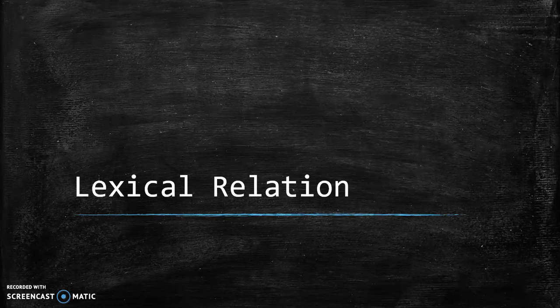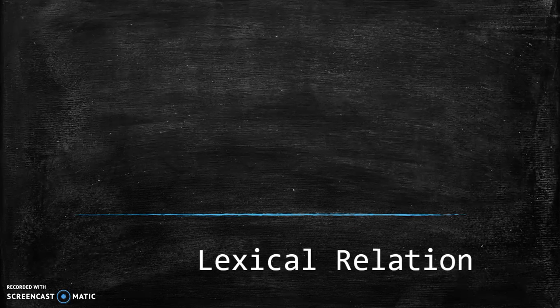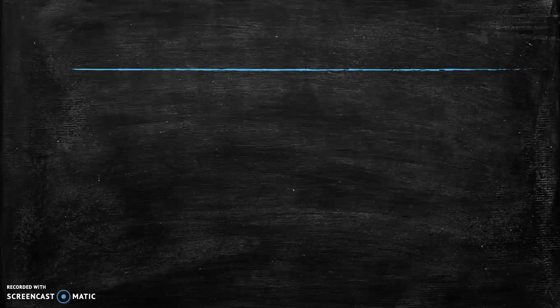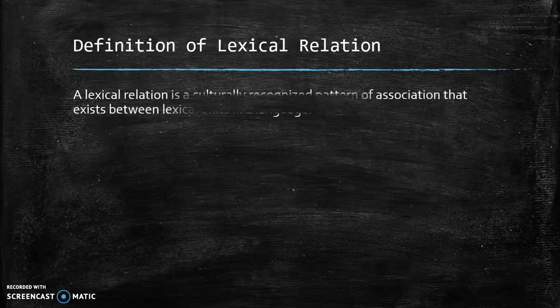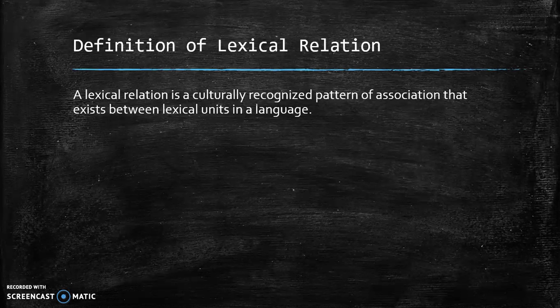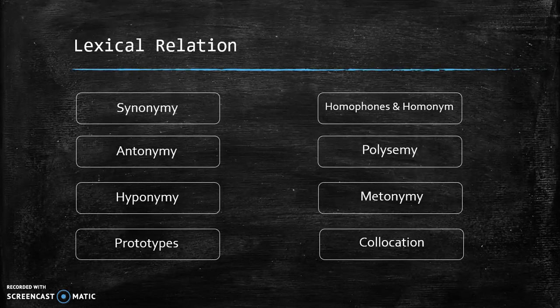Hello guys, now I'm going to discuss about lexical relation. What is lexical relation? Let's go to the definition. Lexical relation is a culturally recognized pattern of association that exists between lexical units in a language.